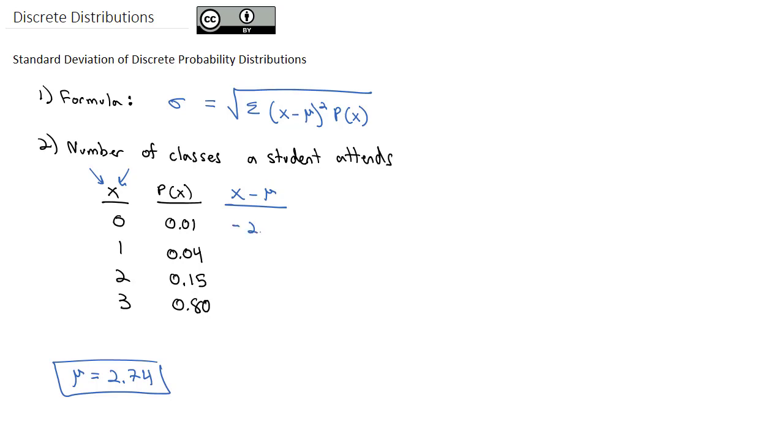So 0 minus 2.74 is negative 2.74. 1 minus 2.74 is negative 1.74. 2 minus 2.74 is negative 0.74. And 3 minus 2.74 is 0.26.